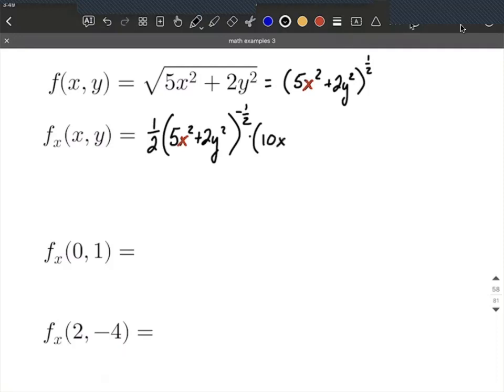The 2 comes down and gets multiplied by 5, making 10x, then we reduce the exponent by 1. For our next term, 2y² doesn't have any x's, so we treat that as all constants, and the derivative of a constant is 0.